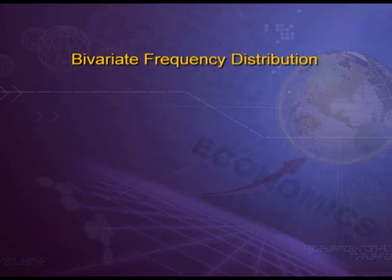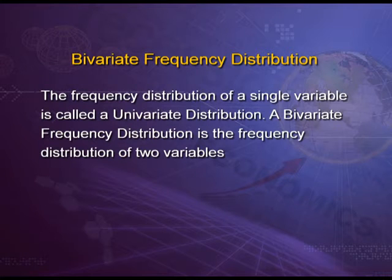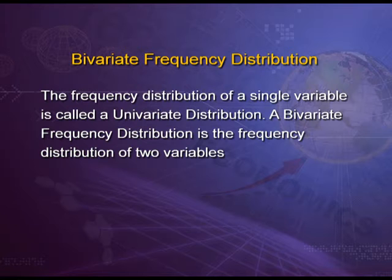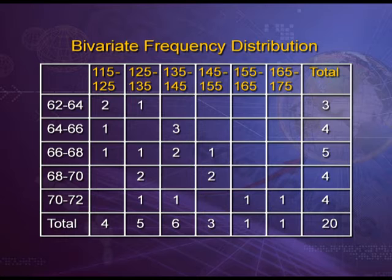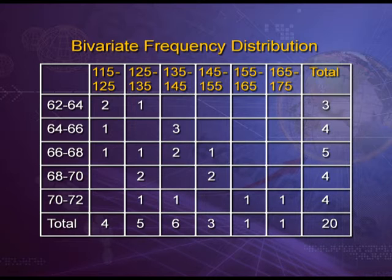The next one is bivariate frequency distribution. It can be explained by talking about two types of analysis — the first one is univariate distribution and the second one is bivariate. Univariate distribution simply means we are going to talk about a single variable. On the other hand, if we take two variables simultaneously, that means we are talking about bivariate frequency distribution. This can be explained with a table from a production house, in which one axis has advertisement expenditure and the other has increase in sales.